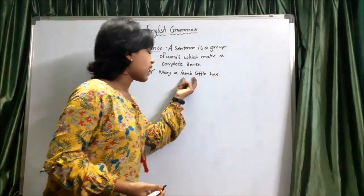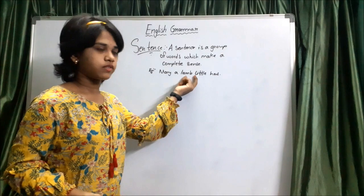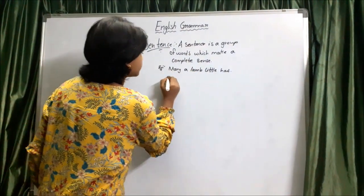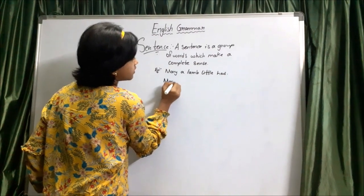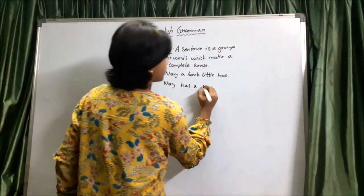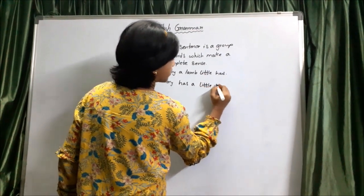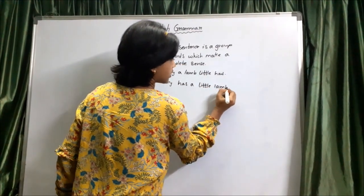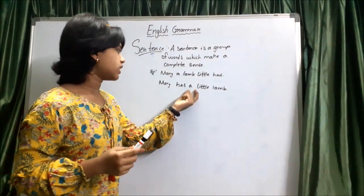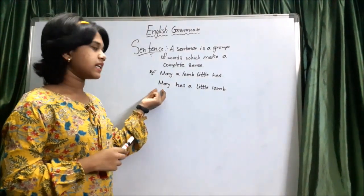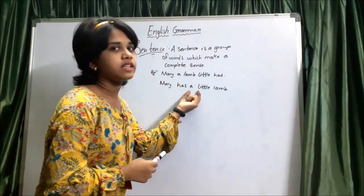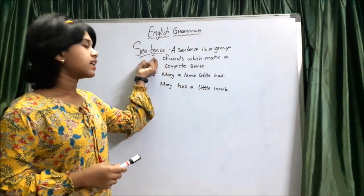We are not having a correct proper sense for this — we are not having a meaning. So let's change into the correct form: Marry has a little lamb. Now we are having a correct proper sense for it. The meaning is Mary, a girl, is having a little lamb. We are having a meaning, so this comes under a sentence.